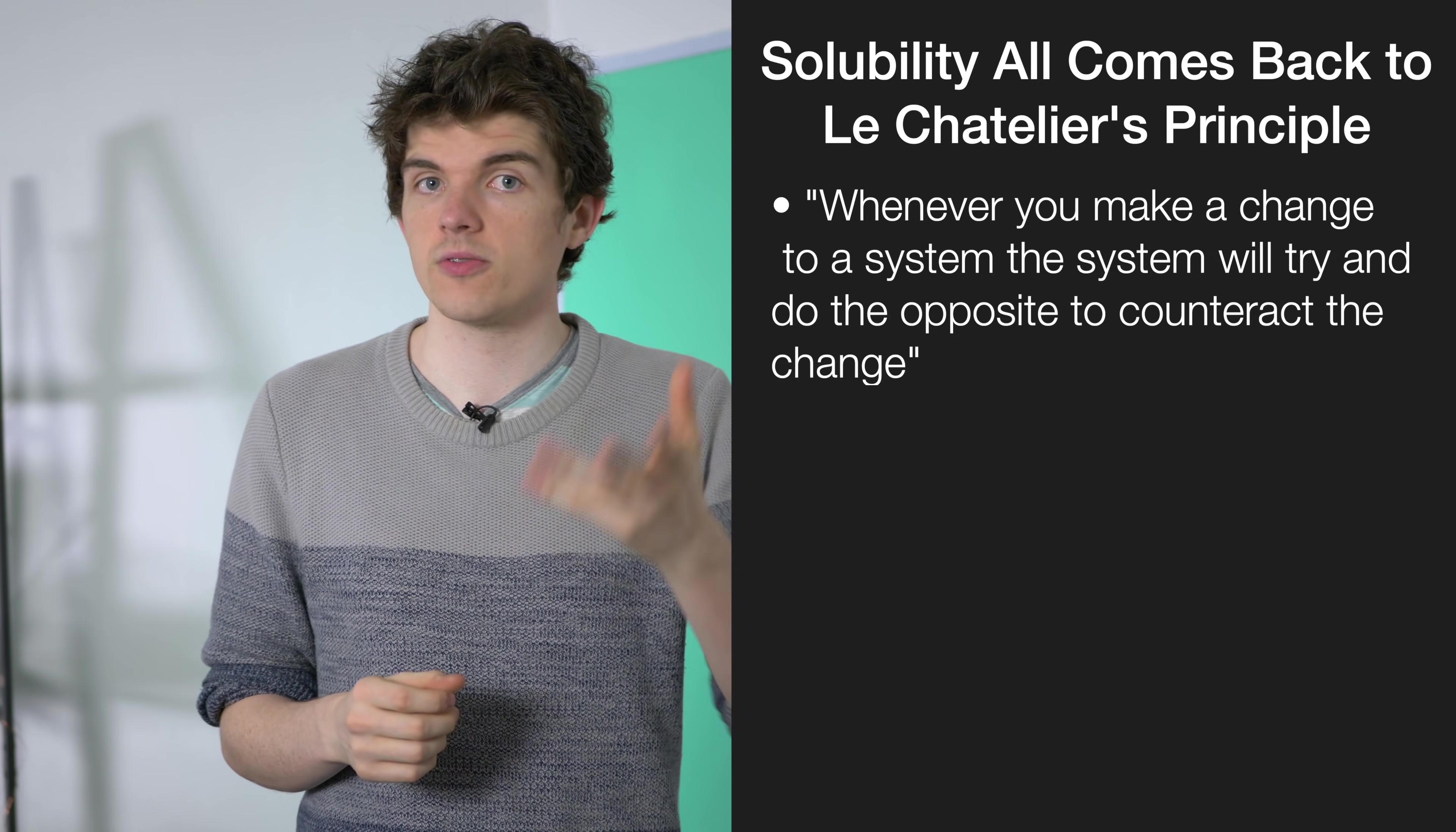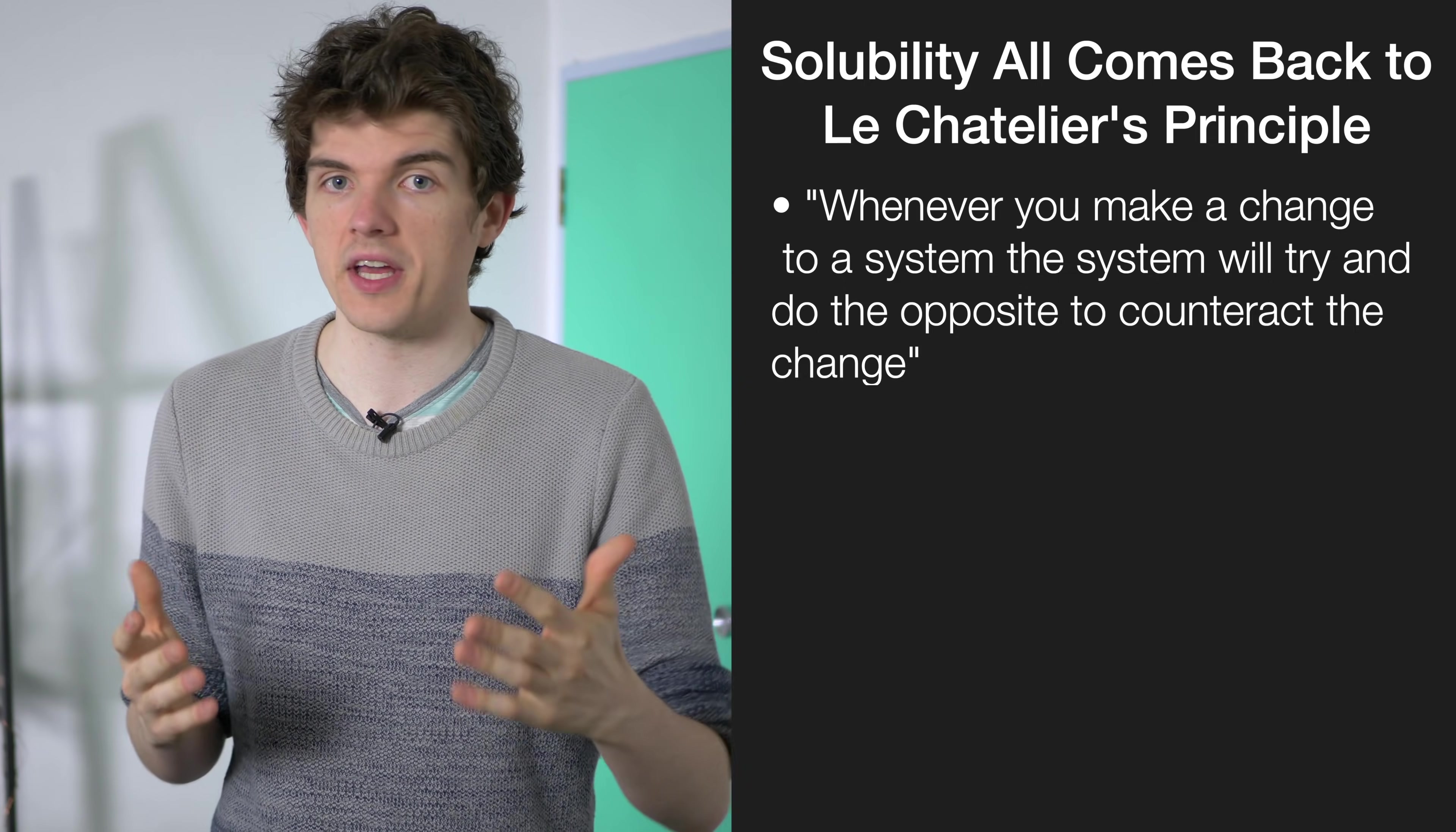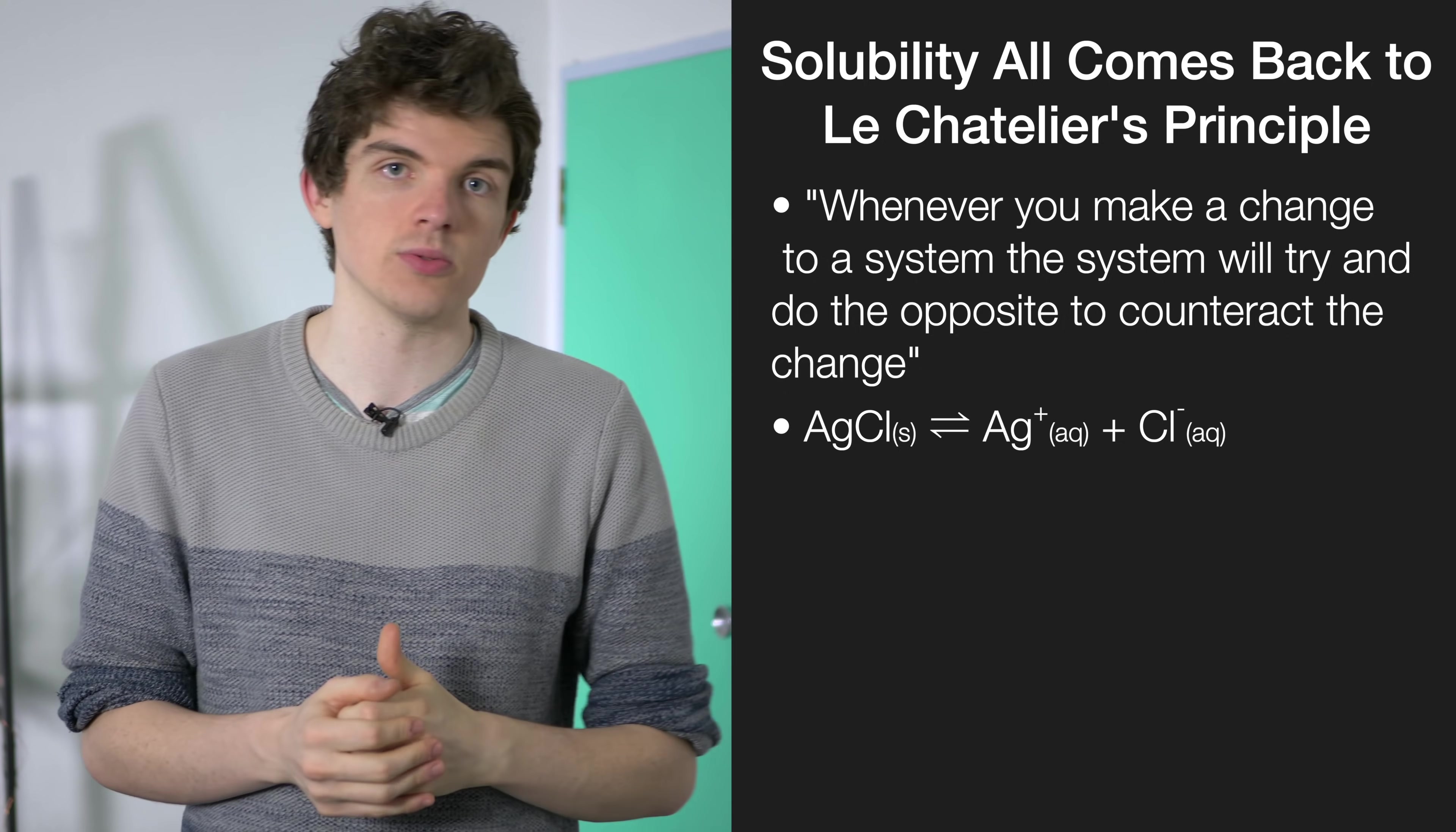So if we think about something like silver chloride, for example, if we already had some sodium chloride in the solution, that would bump the chloride concentration way up. And what's that going to do to our equilibrium? Well, it's going to try and counteract the change, so it's going to move in favor of the silver chloride, making it less soluble.